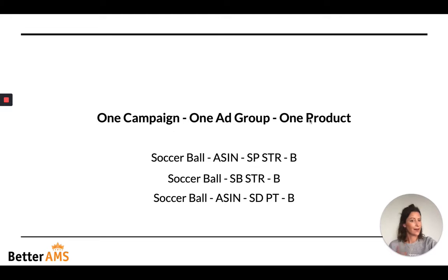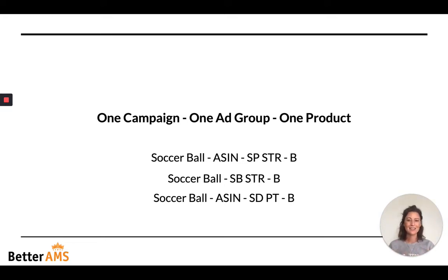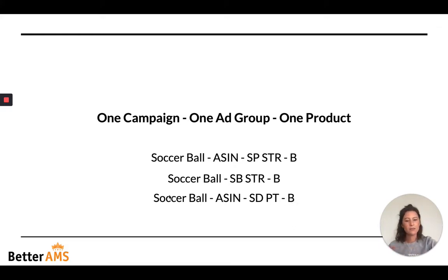Here's what it typically looks like with one campaign, one ad group, one product, and here's some of the nomenclature we use — feel free to take a screenshot. We always start with a product identifier because I cannot memorize ASINs for all my accounts. So we start with what the product is — for example 'soccer ball' — then the ASIN if we want to search within campaign manager, then the type of campaign such as 'sponsored product search term report,' and then a key call-out like 'broad.' For sponsored brands we don't put an ASIN since there are multiple ASINs. For sponsored display it would be something like 'soccer ball, sponsored display, product targeting, only targeting products with less reviews.'